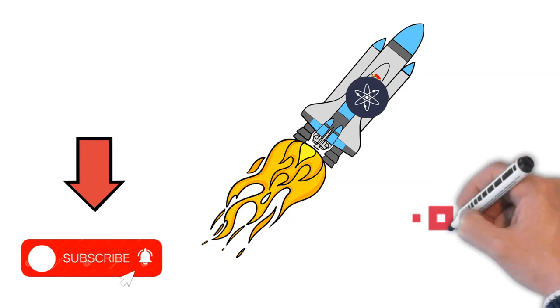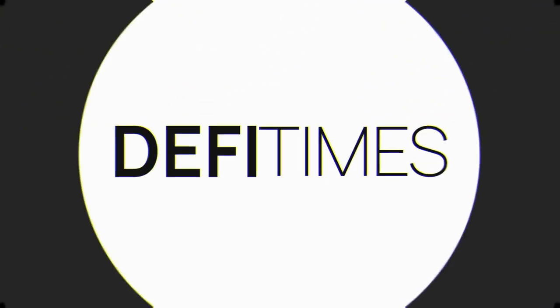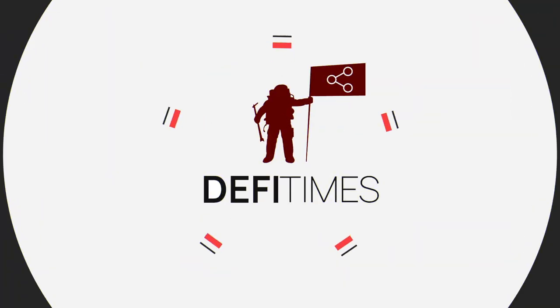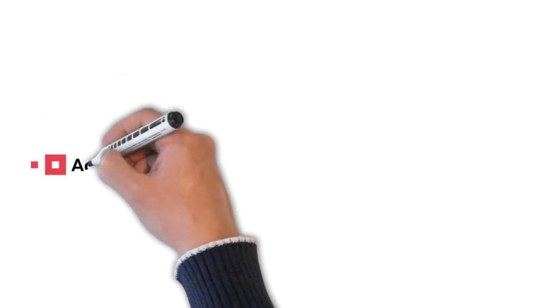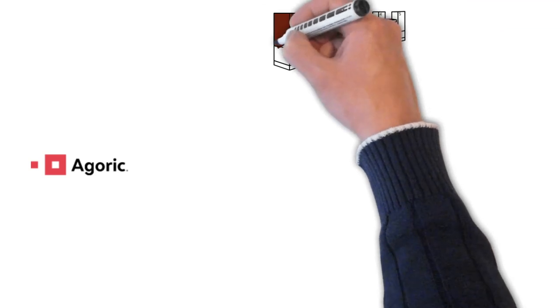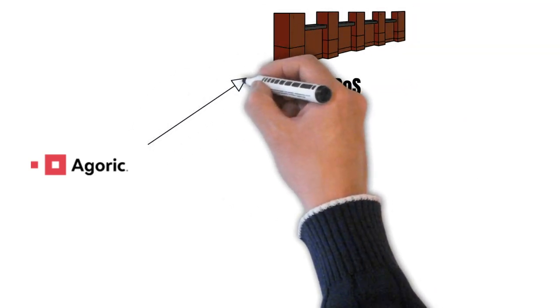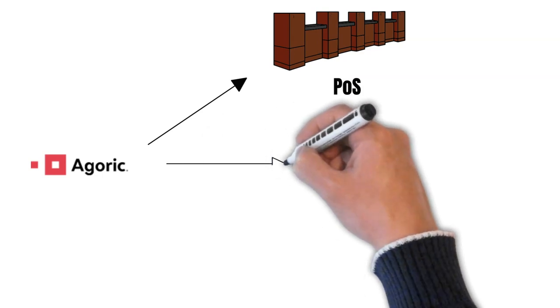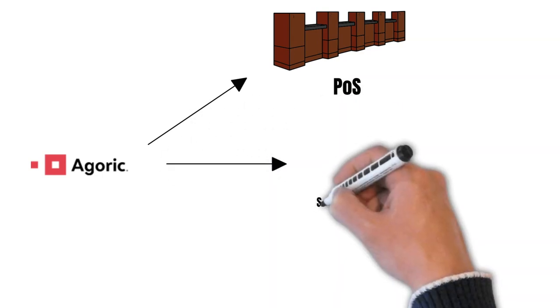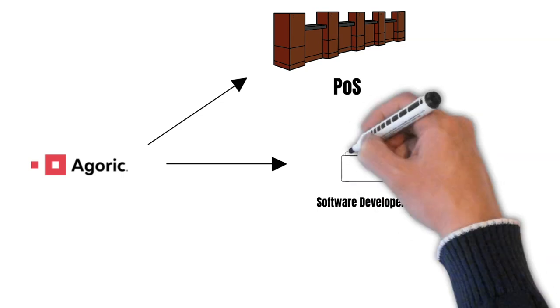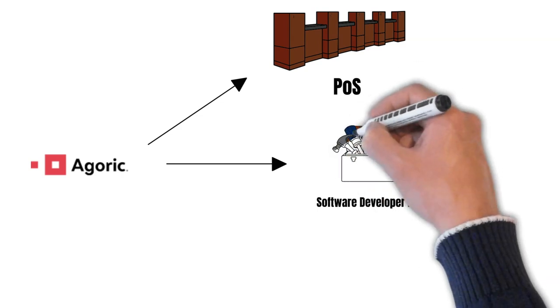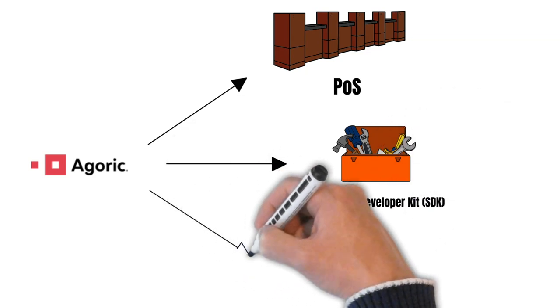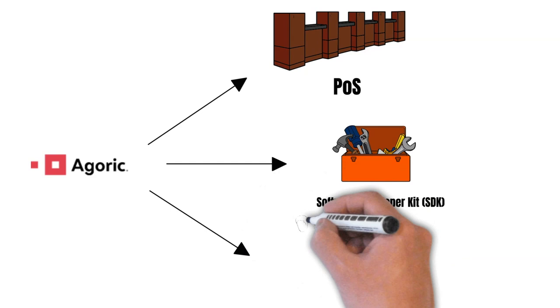But now, let us dive deeper into Agoric. First, let's explain what Agoric is all about. Agoric is a proof-of-stake blockchain built with the Cosmos SDK. The Layer 1 tackles one of the hardest problems in crypto: onboarding more Web2 developers. Web3 has a massive developer problem, which means that we desperately need more developers to join our industry. And Agoric could be the missing piece of the puzzle to bring millions of new developers to crypto. But how does it work?